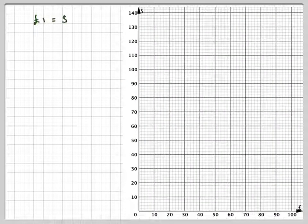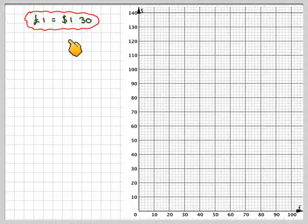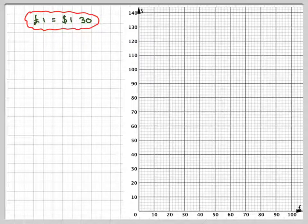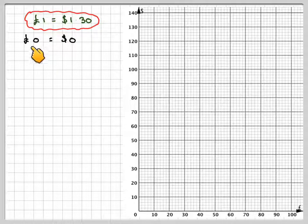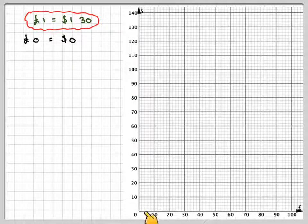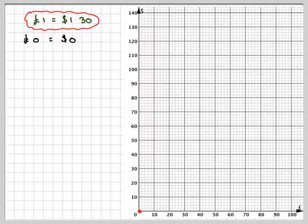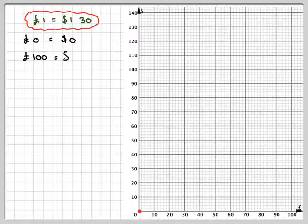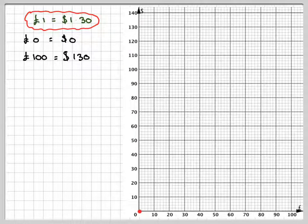Normally in this type of question you're given the axes. We know that one pound is equal to one dollar thirty. So zero pounds equals zero dollars—that means I can put a point here. And also, a hundred pounds equals 130 dollars, so I can put a point at 100, 130.